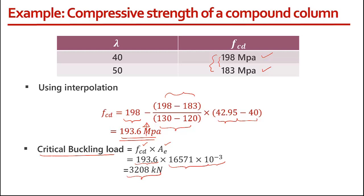In this video we have seen how to calculate the critical buckling load for a compound column. The procedure is straightforward: use the tables in IS 800, and since this is buckling class C, use Table 9C. To use that table you need the effective slenderness ratio, which requires the radius of gyration, which in turn requires the moment of inertia of the compound section. Following these steps, you can clearly calculate the design axial compressive load for a built-up column section. Thank you.